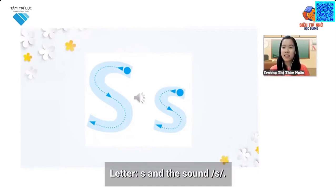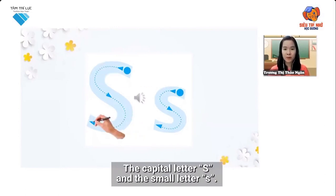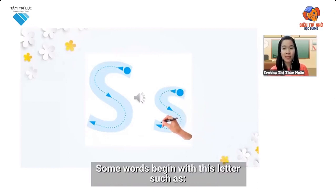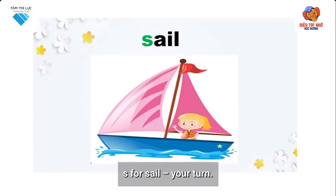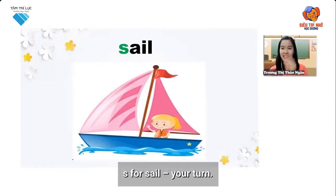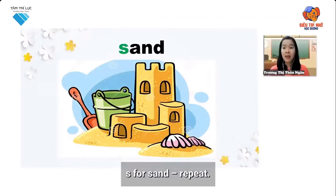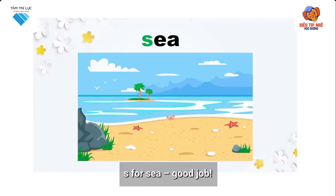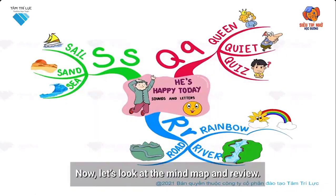We have two ways to write it: the capital S and the small letter S. Some words begin with this letter, such as: S for sale — your turn. S — send. S for send — repeat. S — see. S for see. Good job!